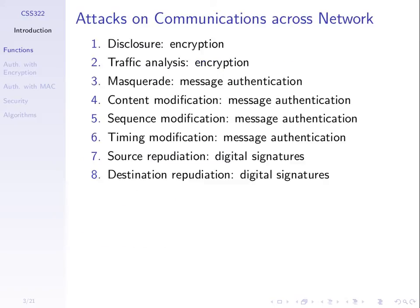Just to remind you, there were six attacks and six different services — there are eight listed here, which is slightly different. Disclosure of messages was one attack where we send a message across a network and someone gets that message which was intended to be confidential but is released — it's disclosed. How do we stop that? Encrypt.